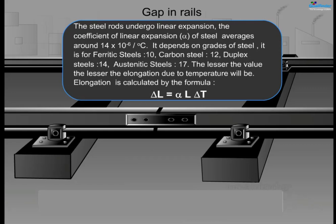The steel rods undergo linear expansion. The coefficient of linear expansion, alpha, of steel averages around 14 × 10⁻⁶ per degree Celsius. It depends on the grade of steel: ferritic steel 10, carbon steel 12, duplex steel 14, austenitic steels 17. The lesser the value, the lesser the elongation due to temperature. Elongation is calculated by the formula: ΔL = α × L × ΔT.